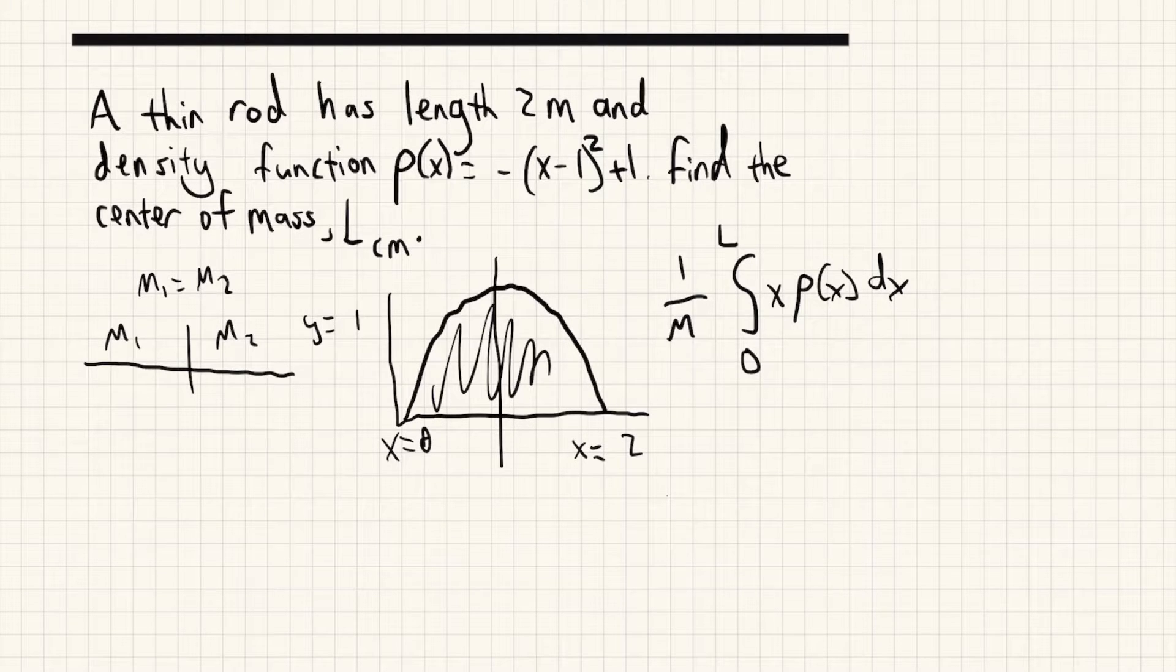So how can we do that for this object? Well, if we look at the mass being the area under the curve, then the first thing to do is to swap out 1 over m with 1 over the integral of ρ(x) from 0 to L.